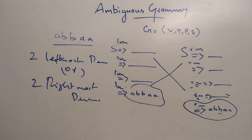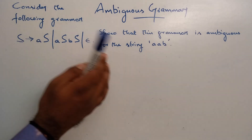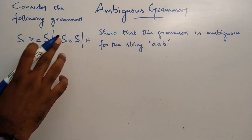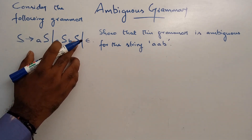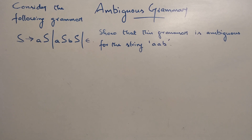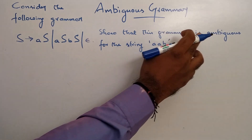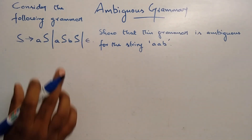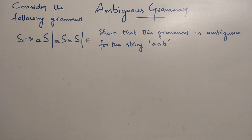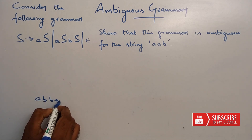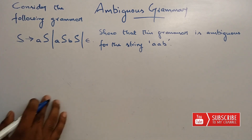Let's solve a sample problem. Consider the following grammar. The variable is a non-terminal S. Terminals are a and b. There are three productions: S tends to A S B S, S tends to B S A S, S tends to epsilon. We have to show that this grammar is ambiguous for a given string.